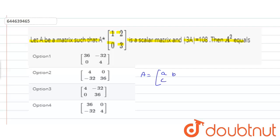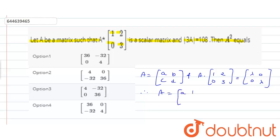Let us consider A is equal to the matrix [[a, b], [c, d]]. Then A multiplied by [[1, 2], [0, 3]] is equal to the scalar matrix [[λ, 0], [0, λ]].